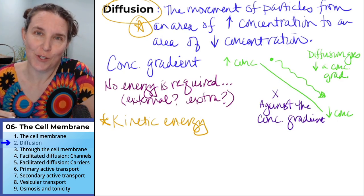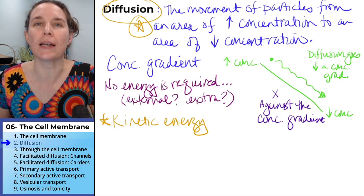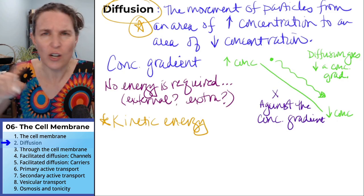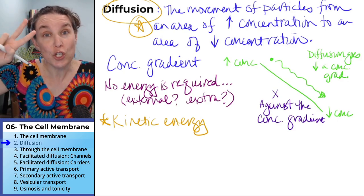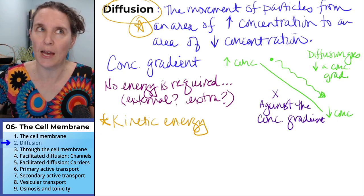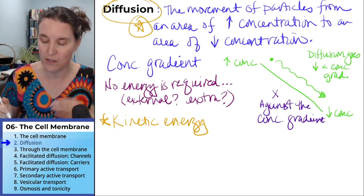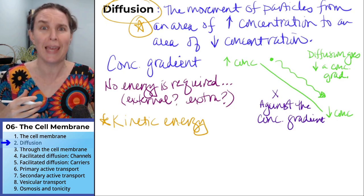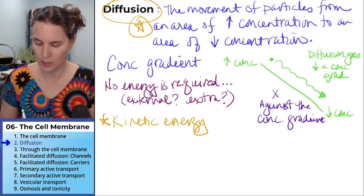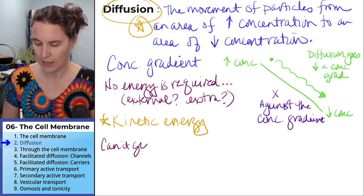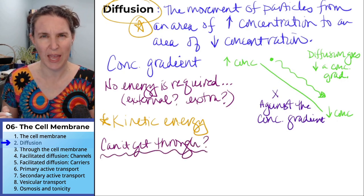Some things cannot diffuse through the cell membrane. If you had to guess, what kinds of things do you think aren't going to be able to get through the cell membrane? You can push pause and think about it for a second. But there are two qualities that determine, and it's messy. So there's nothing linear or boxy about this. But there are two factors that we will consider when trying to figure out if something can move through the cell membrane. The first one is, can it get through? That's the question that we're asking.